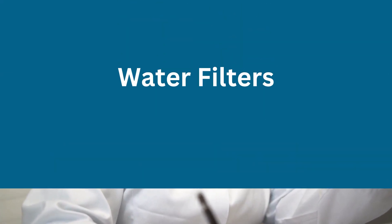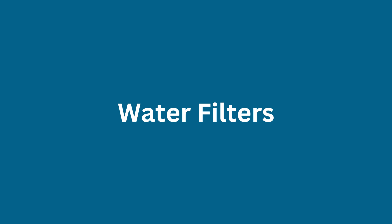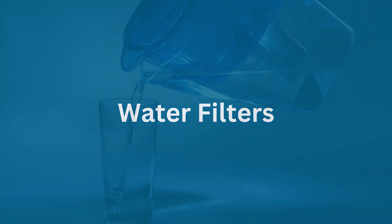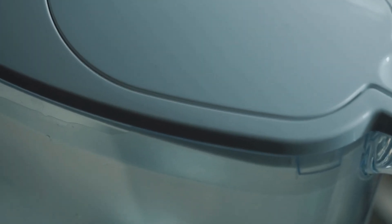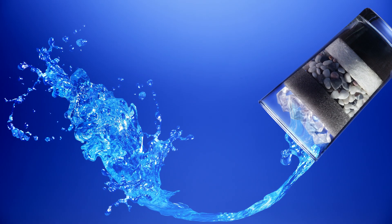Water filters are an effective way to remove impurities from tap water. There are many different types of filters available, including activated carbon filters, reverse osmosis filters, and ultraviolet filters. These filters can remove impurities such as chlorine, lead, and bacteria from drinking water.